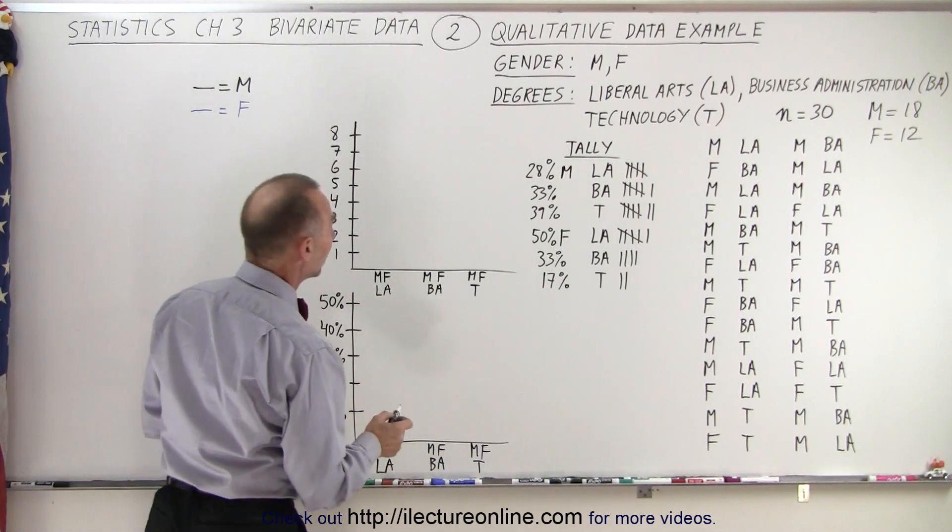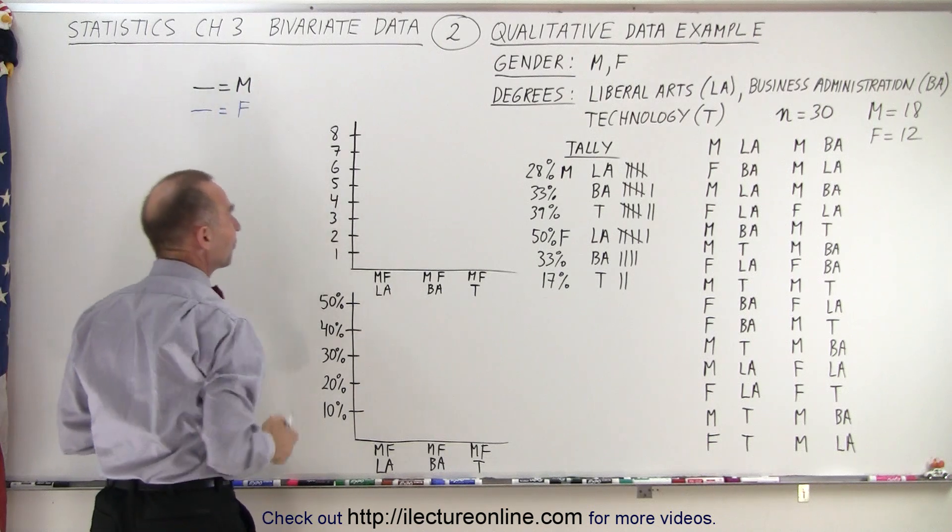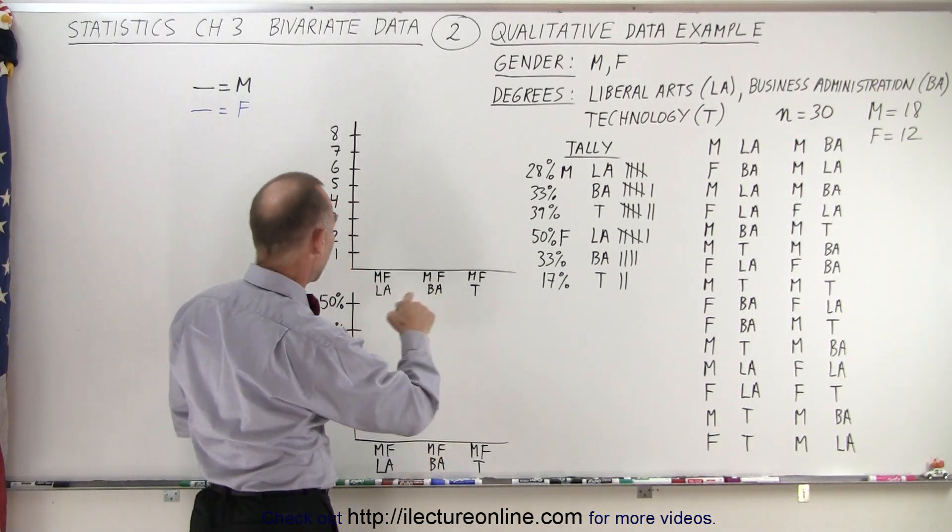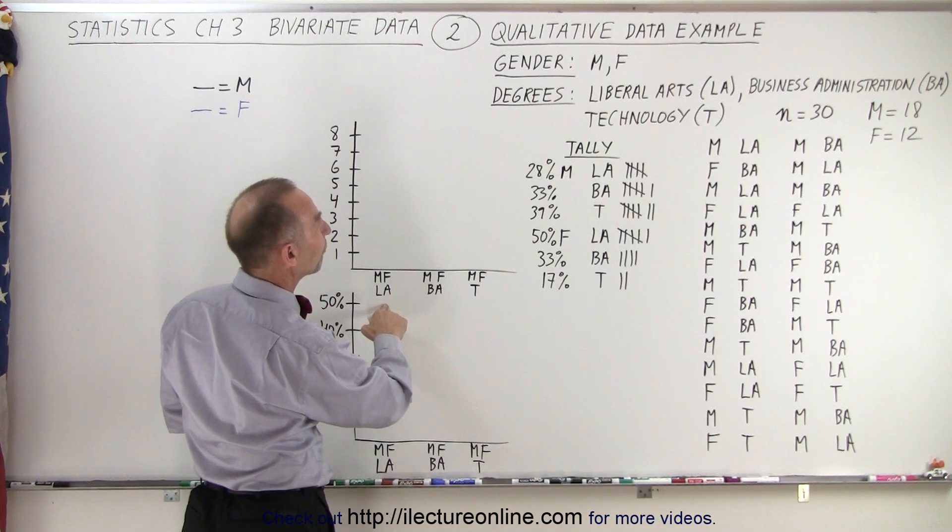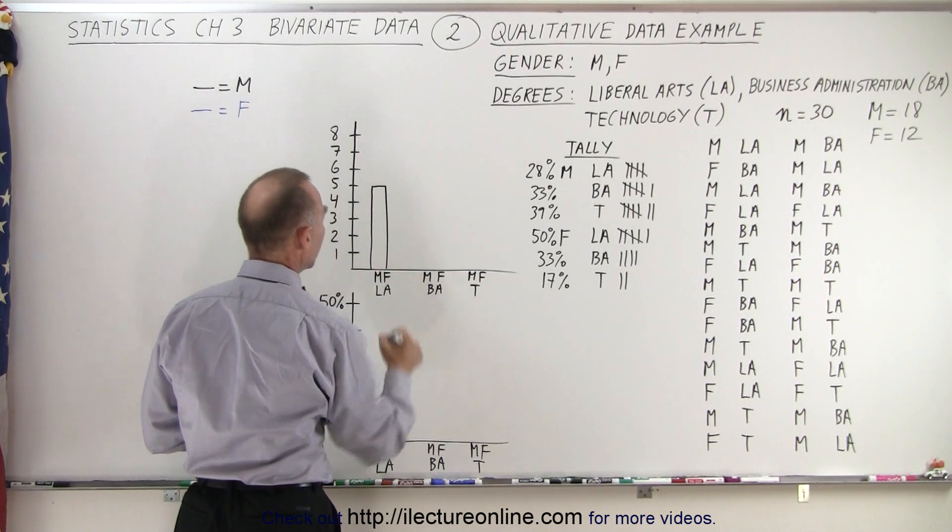But first, let's graph it by the total number. So we're going to use color coding for male and female: Black for male, blue for female. So male and Liberal Arts, there's a total of 5 students. So we'll make a column, 5 students for the male.